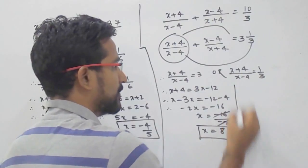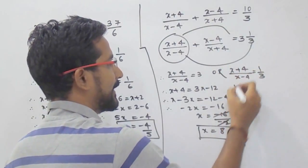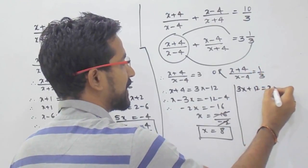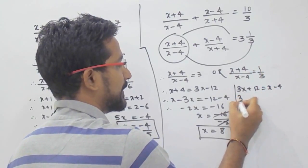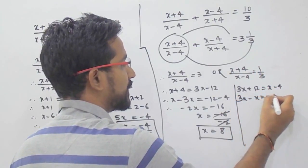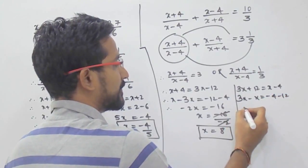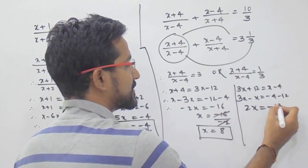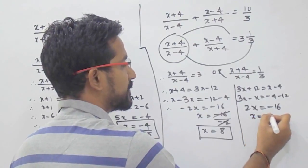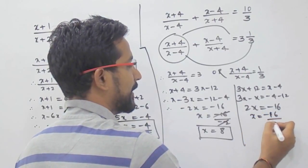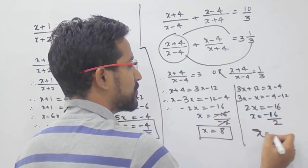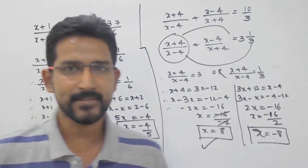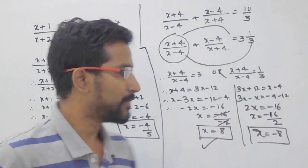For the second case, (x+4)/(x-4) equals 1 by 3. Cross multiplication gives 3(x+4) equals x-4, so 3x+12 equals x minus 4. Then 3x minus x equals minus 4 minus 12, giving 2x equals minus 16, so x equals minus 16 divided by 2, which gives x equals minus 8. The answers are x equals 8 and x equals minus 8.